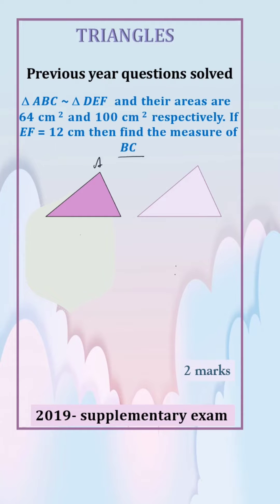In the question, two triangles are given: triangle ABC and triangle DEF. Area of ABC is 64 cm² and area of DEF is 100 cm². The measure of EF is 12 cm. We have to find the measure of BC.